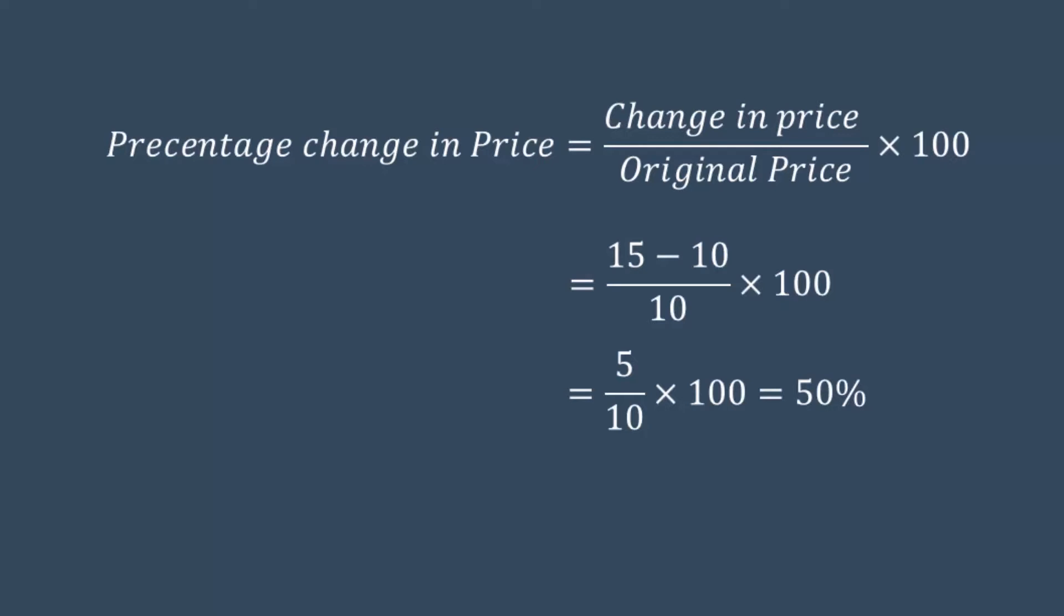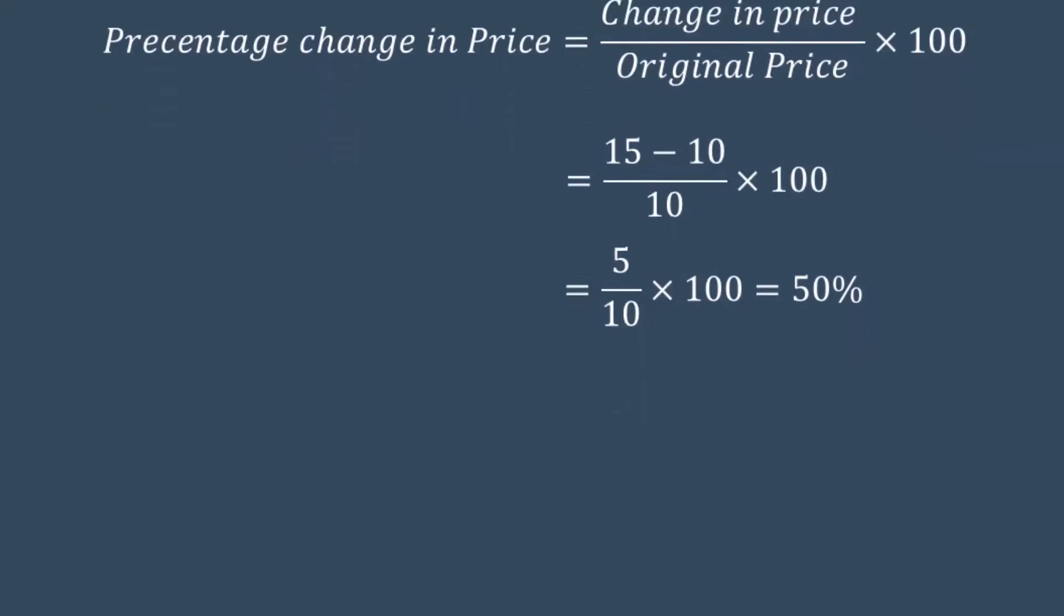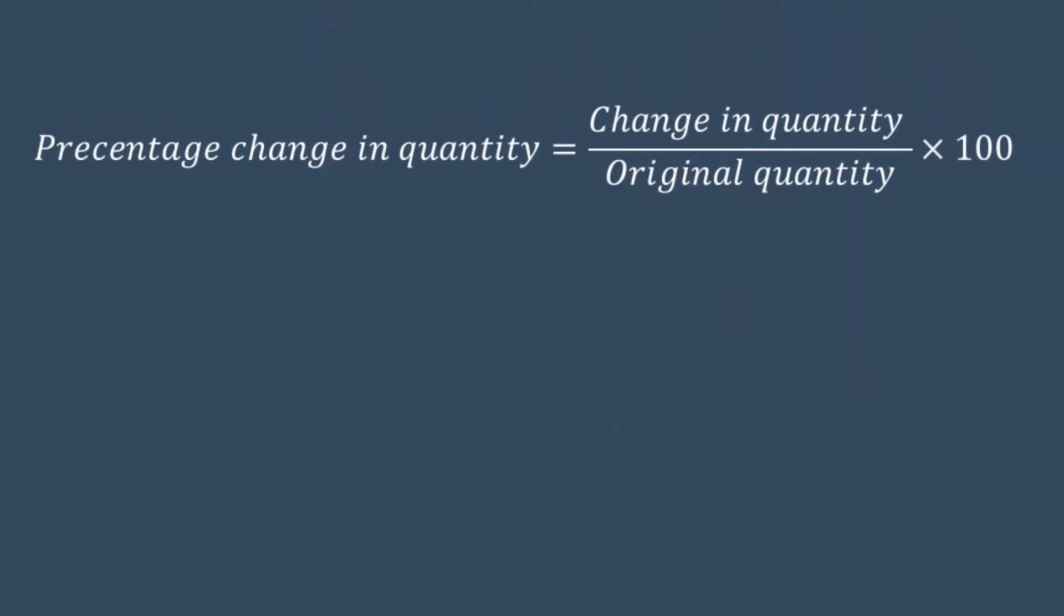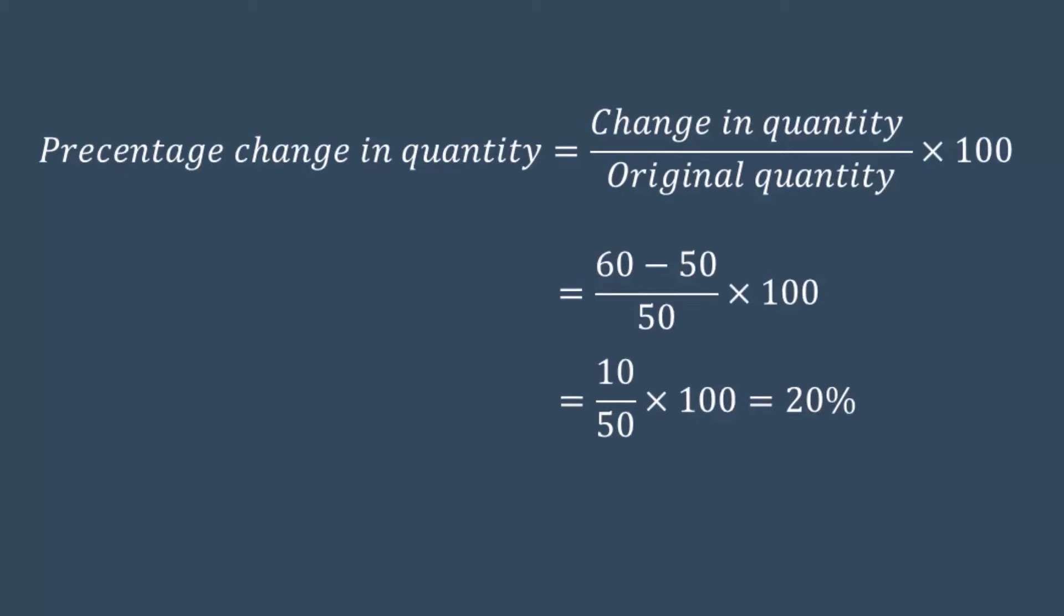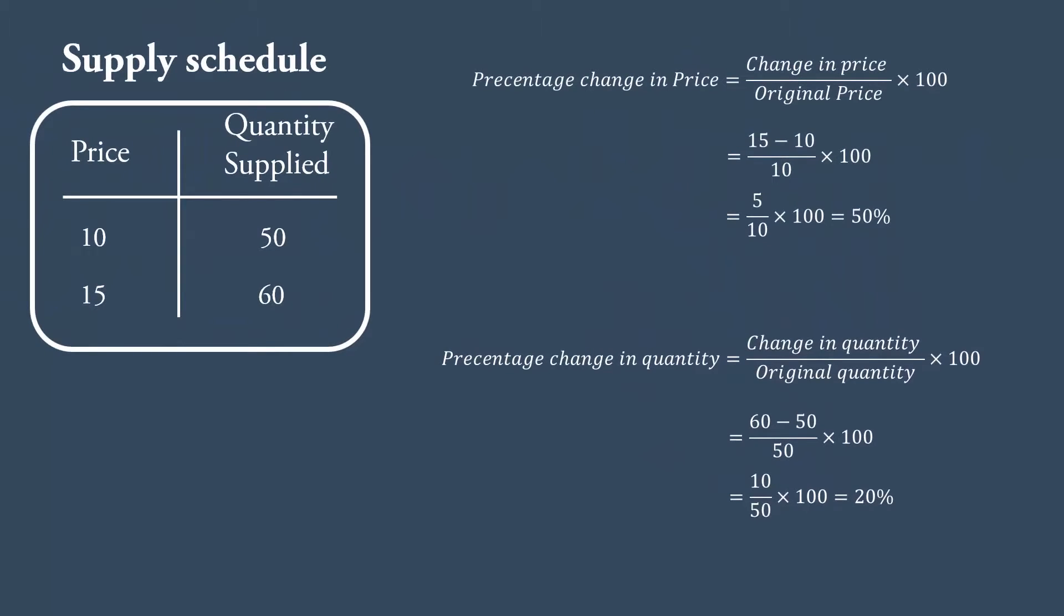Then, take the percentage change in quantity. Change in quantity divided by original quantity multiplied by 100. 60 minus 50 divided by 50 multiplied by 100. 10 divided by 50 multiplied by 100 equal to 20%. Change in price is 50%, change in quantity is only 20%.